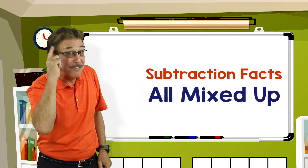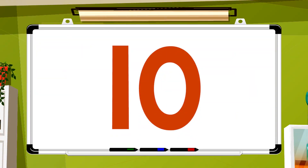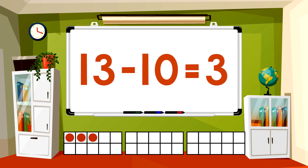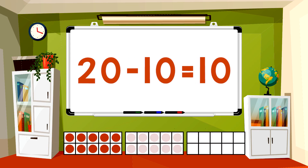Let's learn our subtraction facts all mixed up. Subtract 10 from each number. 16 minus 10 equals 6. 13 minus 10 equals 3. 18 minus 10 equals 8. 20 minus 10 equals 10.